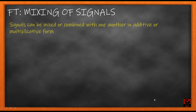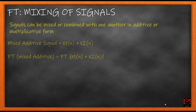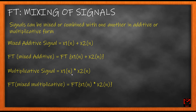Signals can be mixed with one another in additive or multiplicative form, meaning you can either add two signals or multiply two signals. You can even subtract two signals, but the most commonly used operations on signals are addition and multiplication. An additive signal is just two signals x1 of n and x2 of n added together.